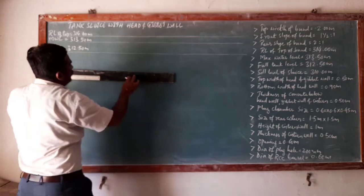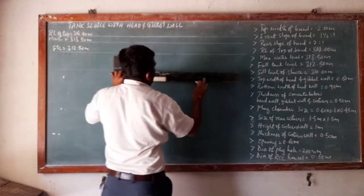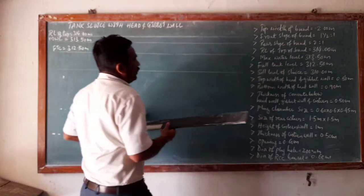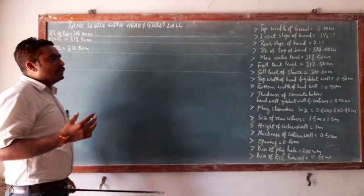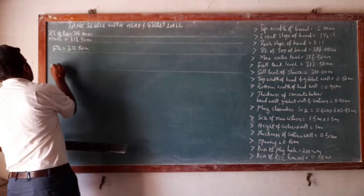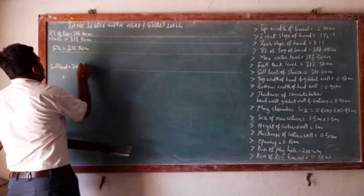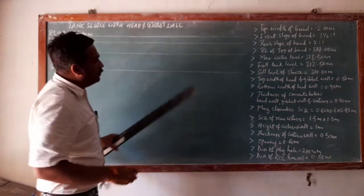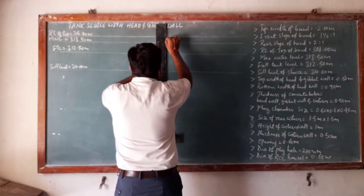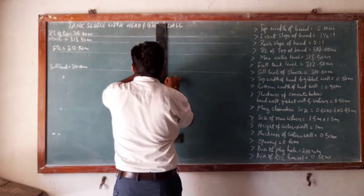While drawing, you are supposed to draw the same to the required scale. The sill level value given is 310 meters. We have now marked all the levels. You should take a reference line or center line, and on both sides half the portion of the drawing will come.